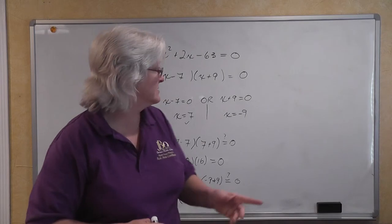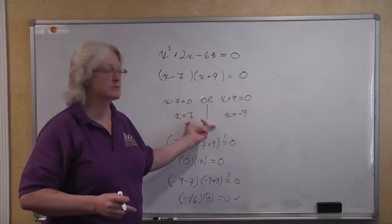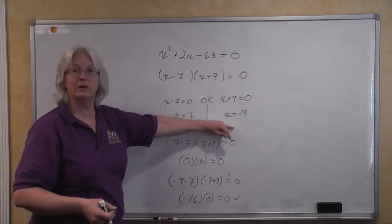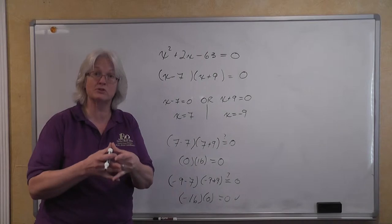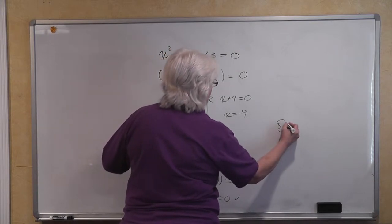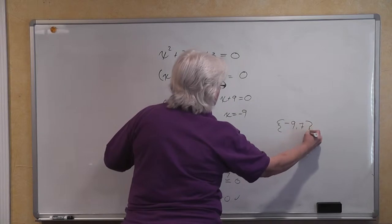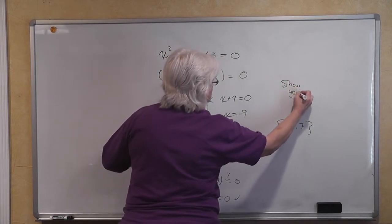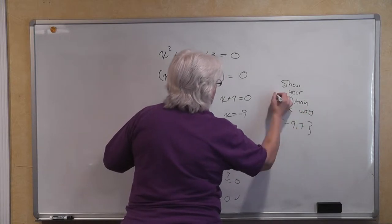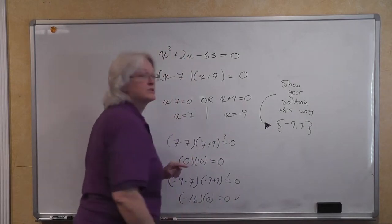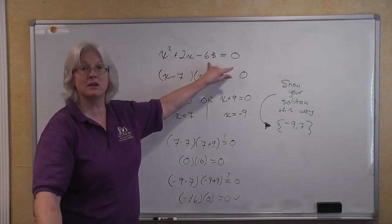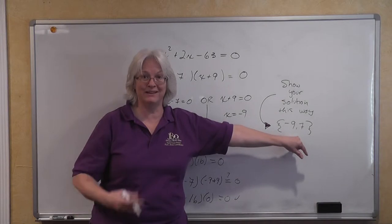Frequently when dealing with quadratic equations, you need to show your solutions as a solution set using set notation. The solution set is the set containing the elements negative 9 and 7. This is how you need to show your solution — the solution to x squared plus 2x minus 63 equals zero is the set containing negative 9 and 7.